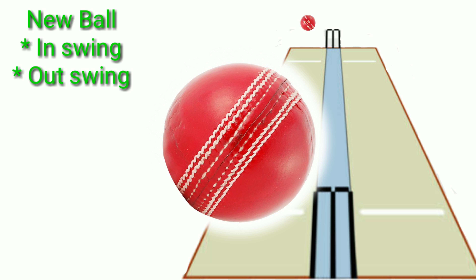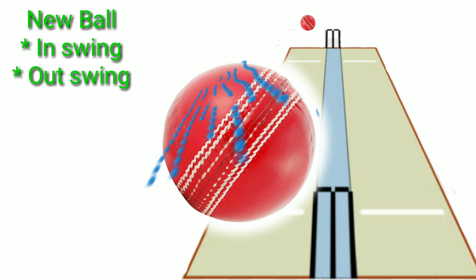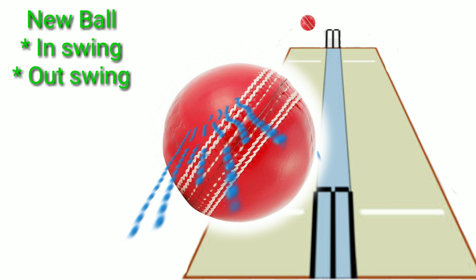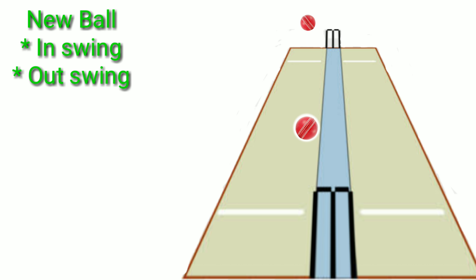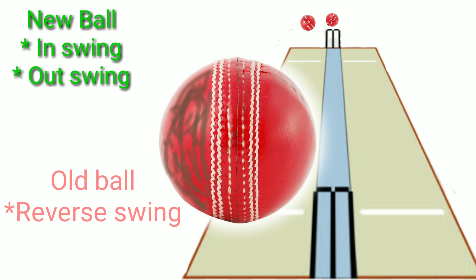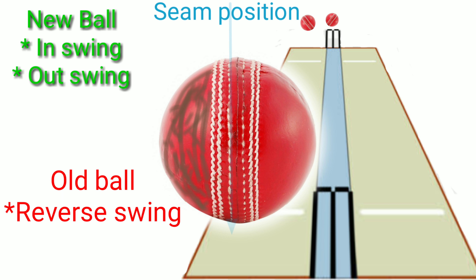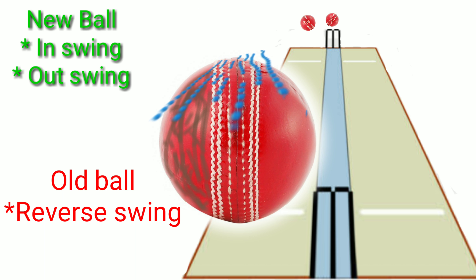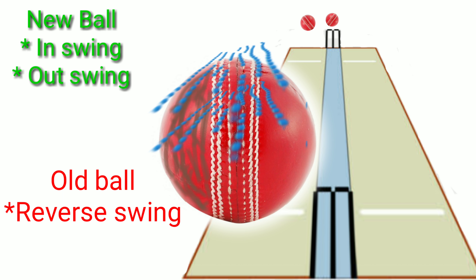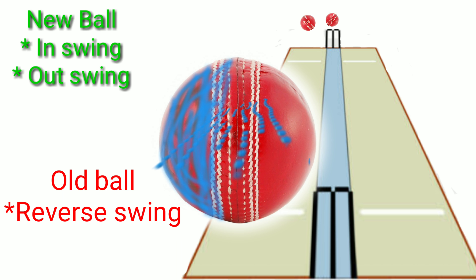Let's move to the cricket ball. When the ball is new, the swing depends on the seam position. When the seam position is in one orientation, more air molecules pass from the upper surface and that diverts the ball in one direction. But if the seam position is in another orientation, most air molecules pass from the other upper surface, diverting the ball in the opposite direction.